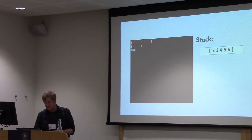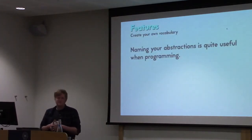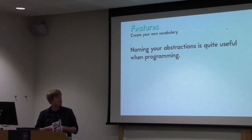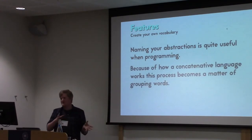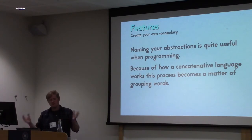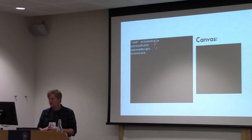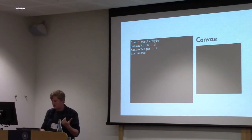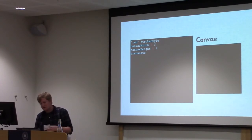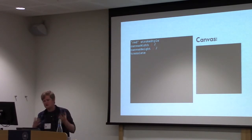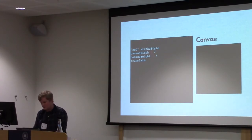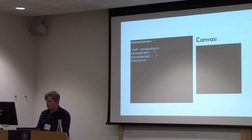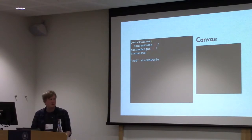Just putting things on the stack isn't very useful — naming abstractions is quite useful. Because of how a concatenative language works, the process of naming a concept becomes a matter of grouping words together. We can look at how a canvas program will look. Here we have a canvas program that sets the stroke style to red, and it will translate the canvas by half the height and half the width — which is kind of like centering the canvas. That would be a more obvious name for this kind of operation. You can name that concept — take these words and put them up here. Now I have defined the concept 'center canvas' and I can just use that.